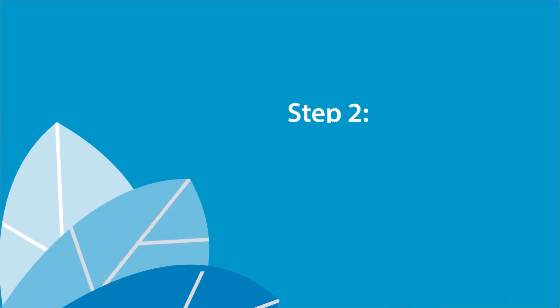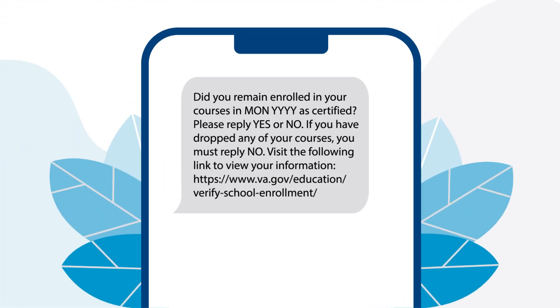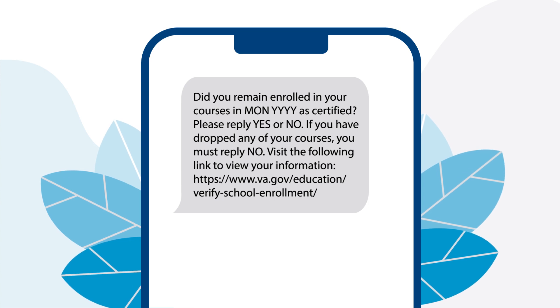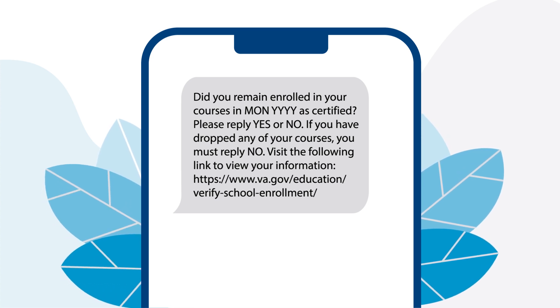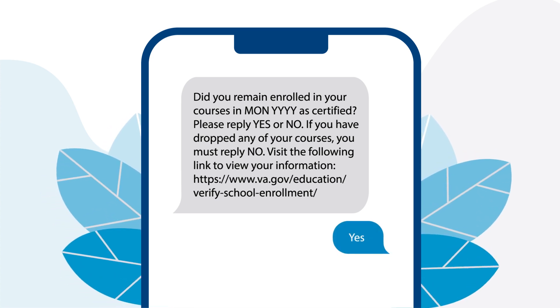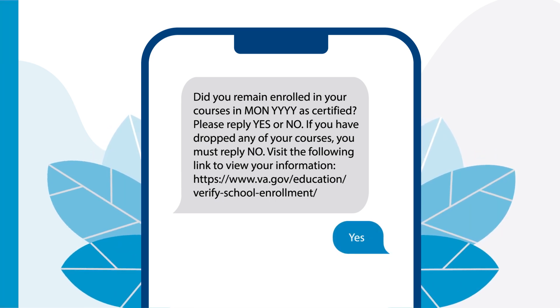Step 2: Verify. Once you've opted in, at the end of each month you'll receive a text from VA that asks you to verify your enrollment for that month. Reply yes to verify your enrollment, and you're done.